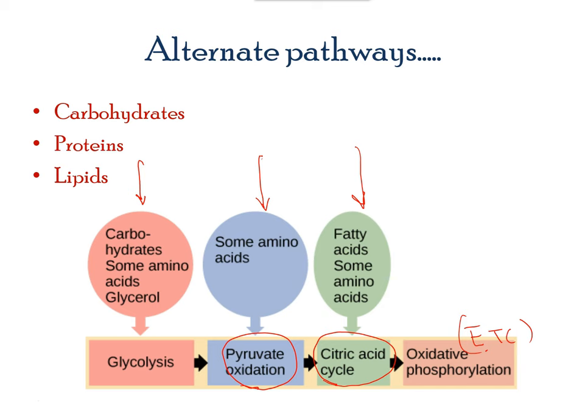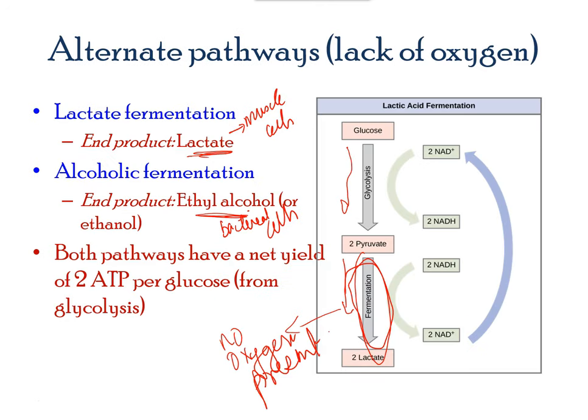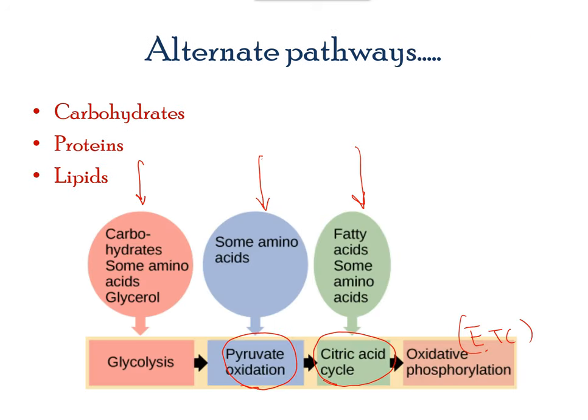These anaerobic processes are also referred to as fermentation. The process of cellular respiration is very complex. The main organelle where cellular respiration takes place is the mitochondria. By the end of cellular respiration, an average of 36 ATP molecules are formed from one glucose molecule, though the process utilized two ATP molecules in the initiation stage of glycolysis.